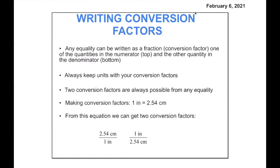If we're talking about the equality that one inch equals 2.54 centimeters, we can write that where we have 2.54 centimeters is to one inch, or we can say one inch is to 2.54 centimeters. So we can use either one of those conversion factors in our dimensional analysis problem.